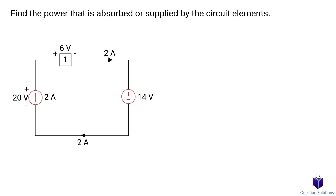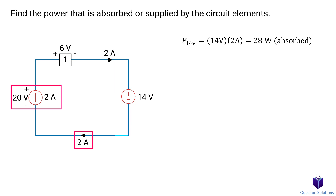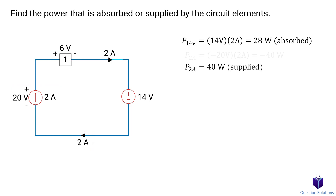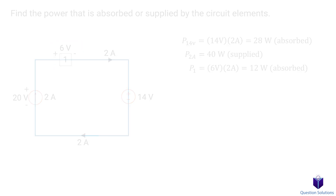In this circuit, we need to find the power absorbed and supplied by each element using passive sign convention. Starting from the voltage source: current enters the positive terminal, so 14 × 2 = 28 watts absorbed. For the current source: current enters the negative terminal, so −20 × 2 = −40 watts, meaning power is supplied. For element 1: current enters the positive terminal, so 6 × 2 = 12 watts absorbed.